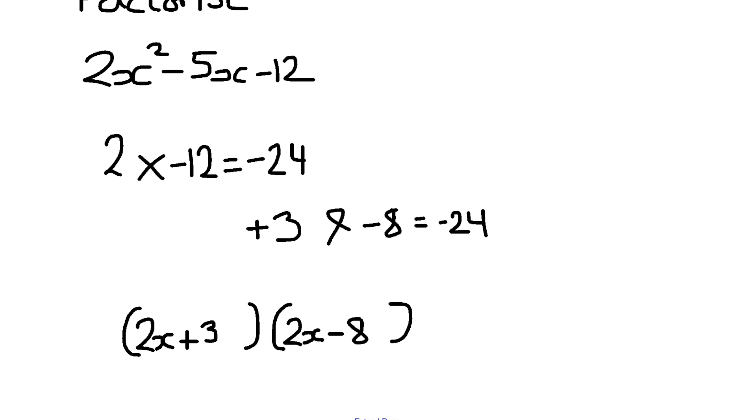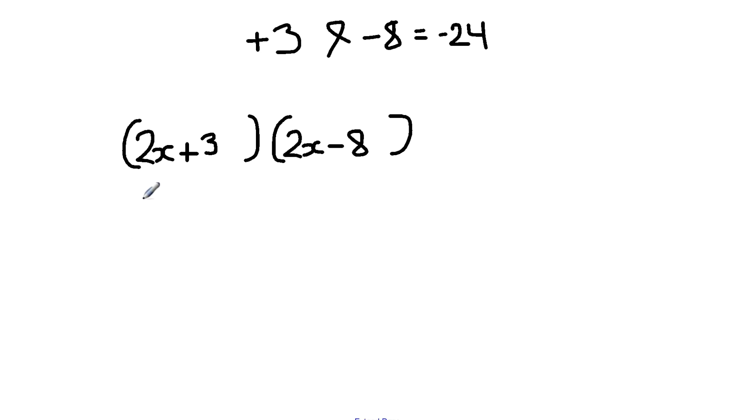What I'm going to do next is simplify the second bracket. I'm going to take the common factor out, which is 2. So I'm going to do 2x divided by 2, which is 1x, and negative 8 divided by 2 is minus 4. So we should have 2x plus 3, open bracket, x minus 4, close bracket.